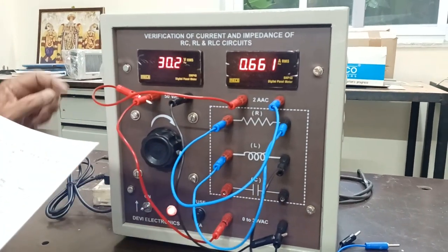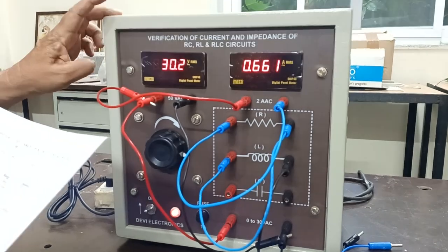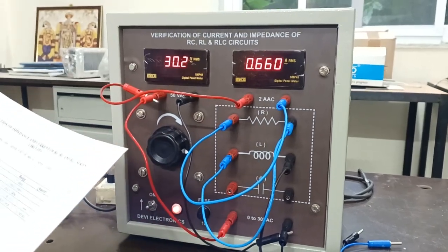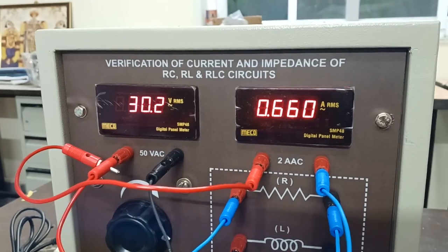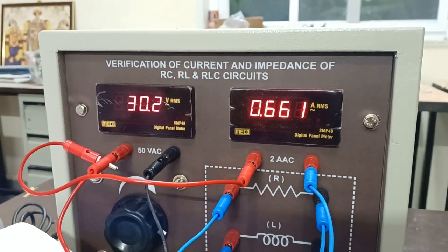So, now I have applied 30 volts across R and L. The current consumed is 0.660. Just to note that down, we will do calculations later.